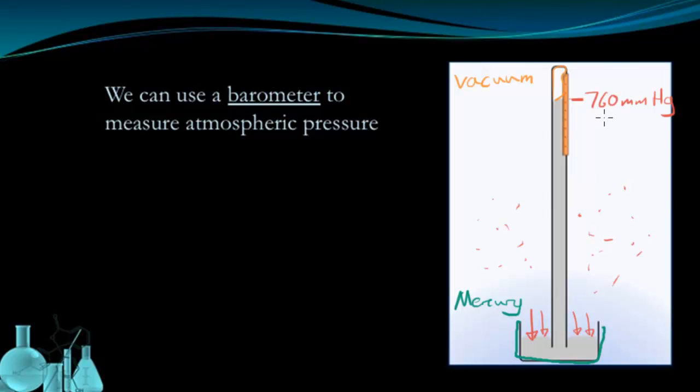like the top of Mount Everest, this would be a much lower height of mercury, because there's less atmospheric pressure the higher you go. So the distance of mercury rises at sea level is 760 millimeters of mercury.